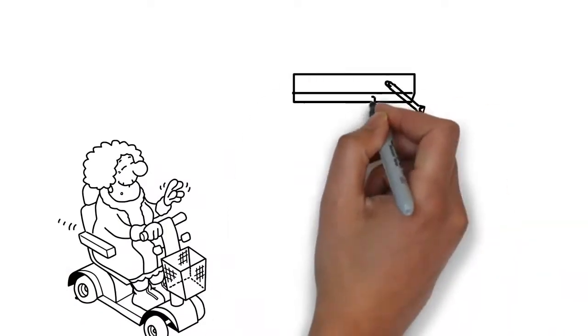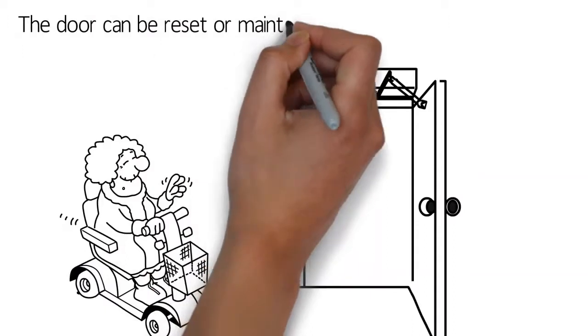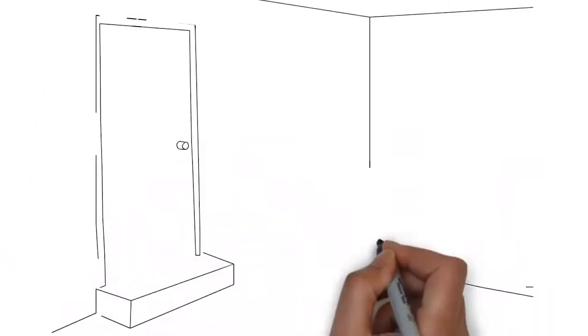Unlock any door first before opening the door automatically. The door can be reset or maintained open or returned to manual mode with a simple three-way switch.